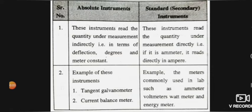The difference between absolute and secondary instruments: absolute instruments read the quantity under measurement indirectly, measured in terms of deflection degrees or meter constants. Secondary instruments allow direct measurement — we can take measurements directly with the help of an ammeter or any other meter.